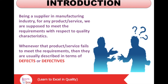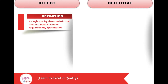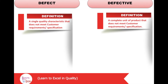The customer who pays money will not be happy, but still there are two conditions: either they are acceptable or they must be scrapped. The definition of a defect is a single quality characteristic that does not meet customer requirements or specification. Whereas a defective is a complete unit of product that does not meet customer requirements or specification.